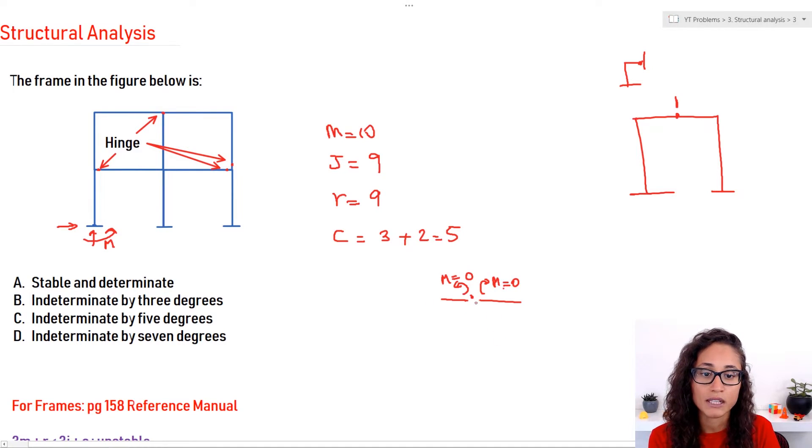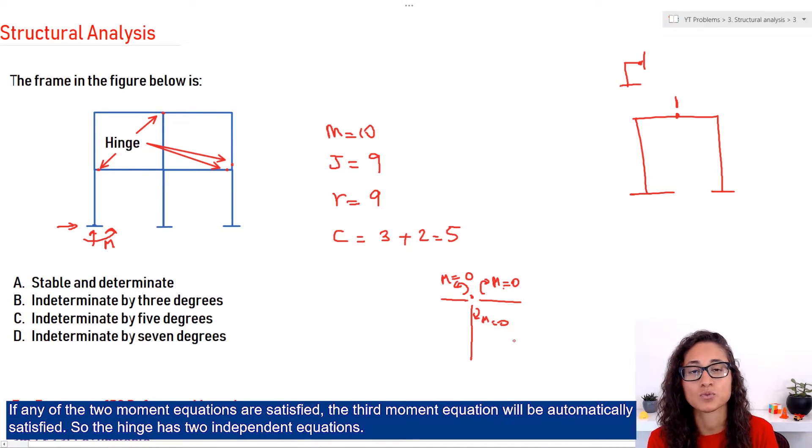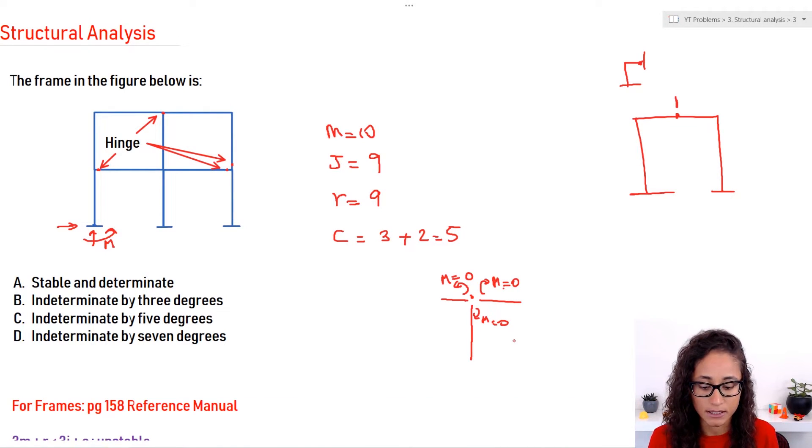So this is the idea behind it. But when you have another member that's coming this way, so now you have three moments equal to zero, but the third moment doesn't really help me much. If I just have two moments that are equal to zero, those are enough for me to determine my reactions. So I would just consider only two equations. So that's the idea behind this.